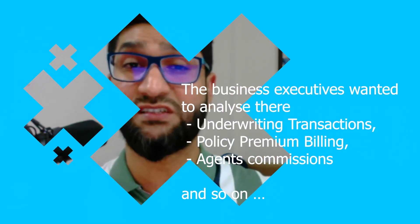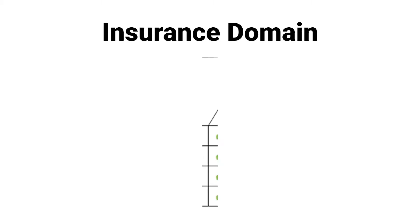Let me give you a simple example of creating a Bus Matrix for the insurance domain. The business executive wanted to analyze underlying transactions, policy premiums, billing, agent commissions, and so on. Corresponding to these business processes, dimensions were added that make sense of the questions being asked: what time the transactions happened (Time dimension), which policyholders were involved, what type of coverage or policies, what items, and which agent sold the policy.